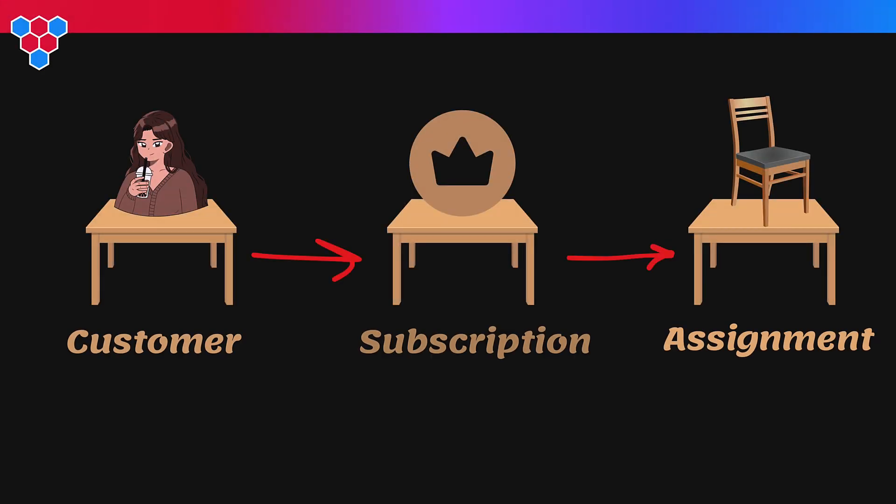Let me explain with some real world code. We'll use a simple schema from Boolean Art. We have a customer that might have zero or more subscriptions, and each subscription can have zero or more seat assignments.